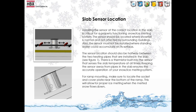Installing the sensor at the correct location in the slab is critical for proper functioning of the snow and ice melting system. The sensor should be located where snowfall is normal and not affected by surrounding buildings. The sensor location should also be halfway between the two heating pipes installed in the slab. There is a thermistor built into the sensor that senses the slab temperature at all times. Keeping the sensor away from pipes ensures accurate operation.